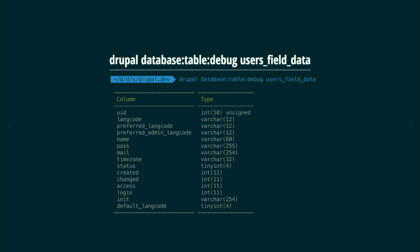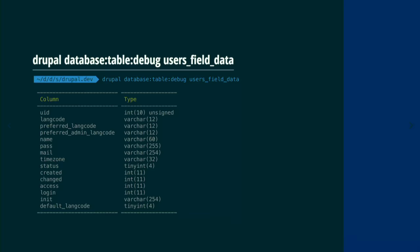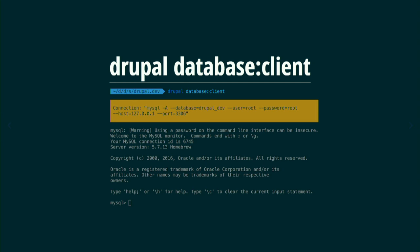If you want detailed information of a specific table, just pass the table name and you'll see it. This is really useful when you enable a module that creates a new content type and new tables in the system — helpful for people not familiar with SQL commands. If you really want to jump into the MySQL client, you can use `database:client`, which passes all credentials to your MySQL CLI automatically.